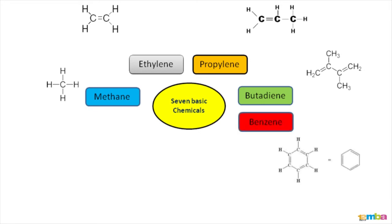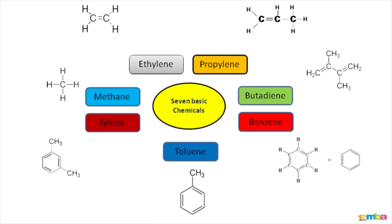The next one, benzene — as we have seen, benzene are ring compounds with single and double bonds alternating between carbon and hydrogen items. And the derivatives of benzene, such as toluene and xylene, where an alkyl group CH3 is attached at different locations.